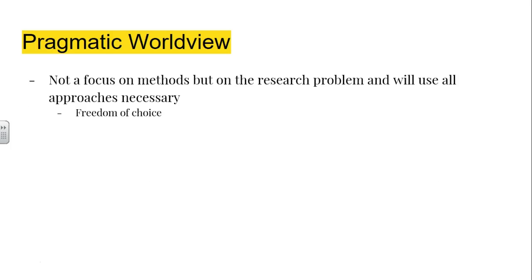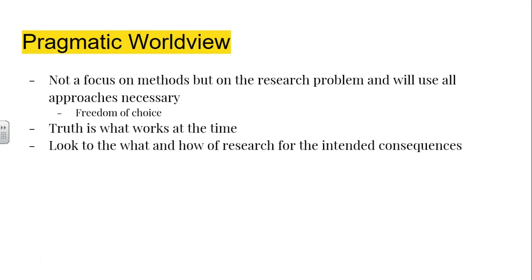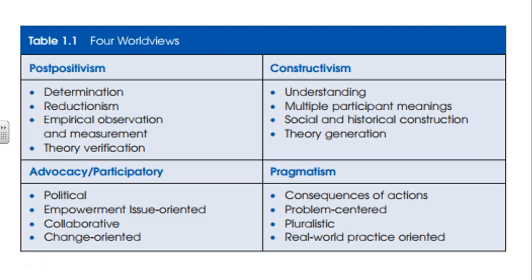Finally, the pragmatic worldview is not focused so much on methods but on the research problem. It uses all approaches necessary, with freedom of choice. In this worldview, truth is what works at the time — if it's effective for you in this time period, that is the truth you use. You look to the what and how of research to find the intended consequences you're looking for. One example is a biography of Donald Trump — a man known for saying whatever is politically expedient at the time. There is a chart here that diagrams the four different types of worldviews, so you can look it over, study it, and understand how they are similar and how they are different.